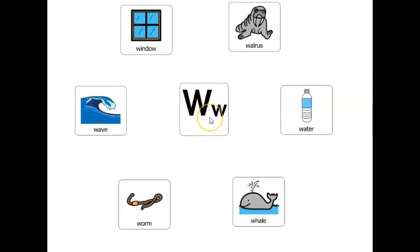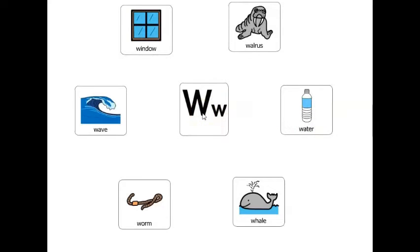Let's play a game. What word that starts with the letter W has flippers? Walrus. What word that starts with the letter W lives in dirt? Worm. What word that starts with the letter W is something you drink? Water. What word that starts with the letter W is a bump in the ocean? Wave. What word that starts with the letter W has a spout? Whale.